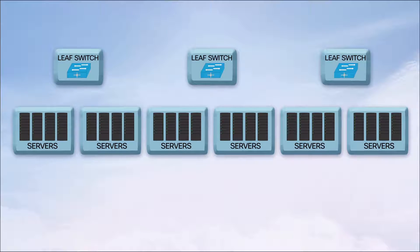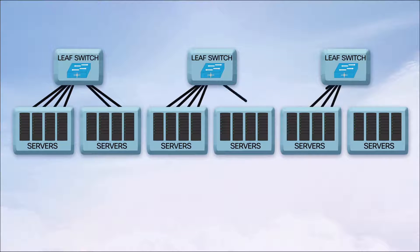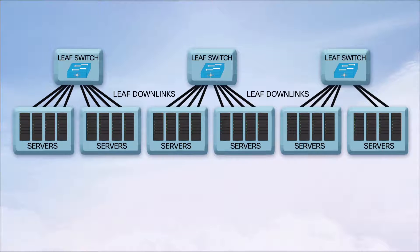At the bottom, we have the leaf switches and servers. The QSFP 100G downlinks on the leaf switches break out into four 25G SFP connections, one for each server. Copper cables are the lowest cost solution for this distance, typically less than 5 meters.